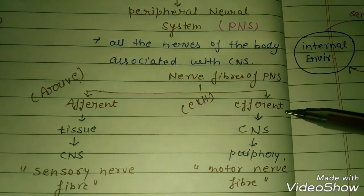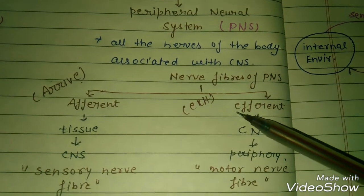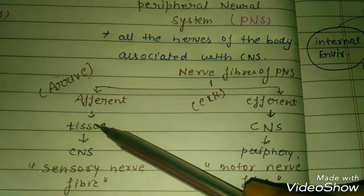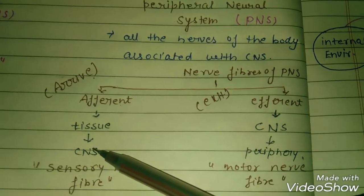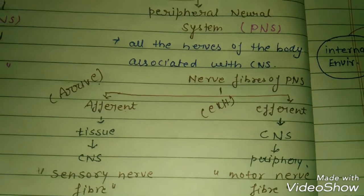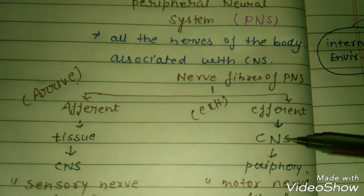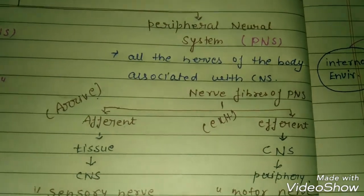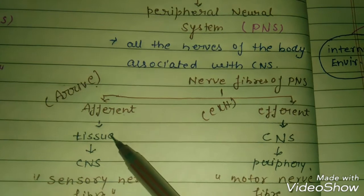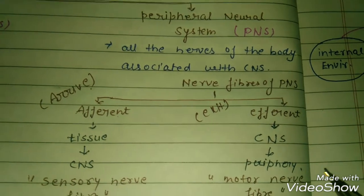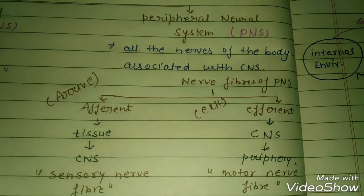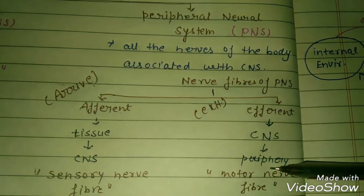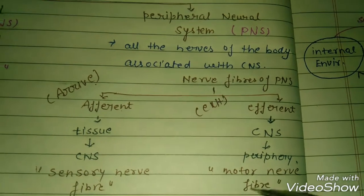Efferent means exit from the CNS. When a stimulus has been processed by the CNS, the response goes out through peripheral nerves. These outgoing nerve fibers from CNS to periphery are called motor nerve fibers. If you have any confusion you can ask me in the comments.